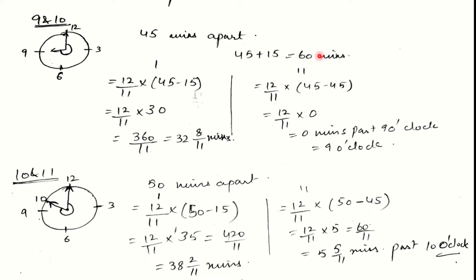For 9 to 10 o'clock: the gap is 45 minutes. Adding 15 would give 60 minutes, crossing the 1-hour limit. So now we subtract 15 and also subtract 45. Subtracting 15 from 45 gives 32 and 8/11 minutes past 9 o'clock. Subtracting 45 from 45 gives 0 minutes past 9, which is 9 o'clock itself. This confirms that from 8 to 10 o'clock the hands are at right angles three times, so in 12 hours they are at right angles 22 times.